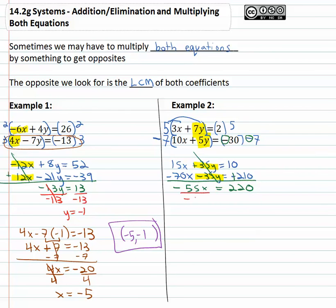Now to get the x by itself we divide by -55 on both sides and x is equal to -4.